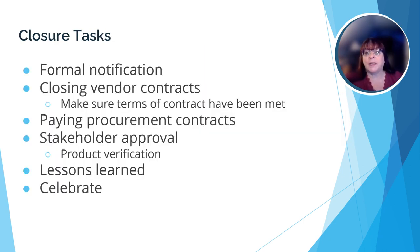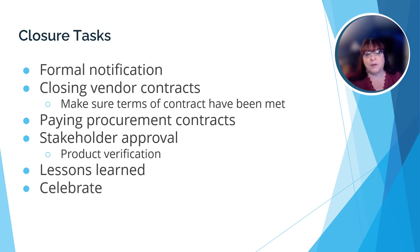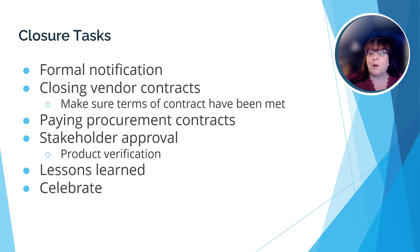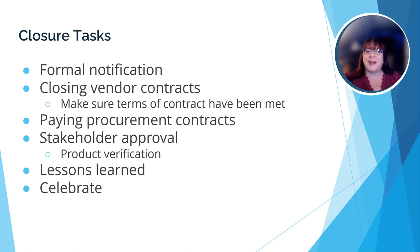As you've seen, once the project implementation has been completed, the project team is not yet done. There are many tasks that need to be completed before the team can go their separate ways. The team will need to formally notify the stakeholders that the project has been completed, make sure any vendors they hired have completed their remaining tasks and are paid, and ensure that anyone who provided materials or labor is paid. They will also need to get stakeholder approval and collect lessons learned — and finally, they need to celebrate.